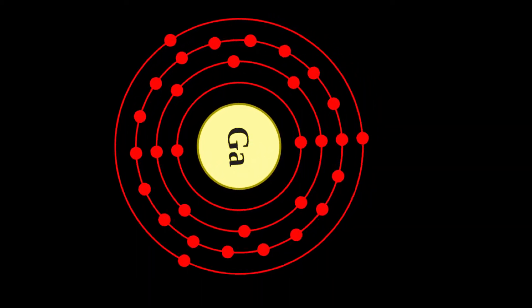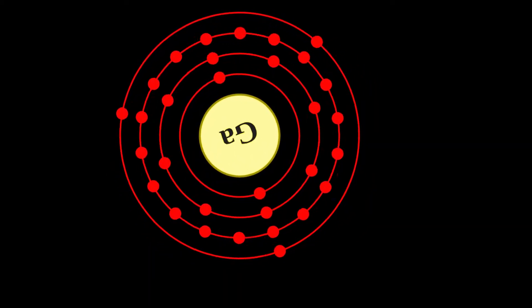Gallium is a chemical element with symbol Ga and atomic number 31.